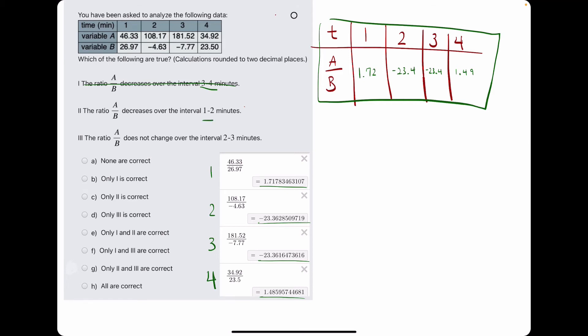So then we check for 1 to 2, and we check if it's decreasing. So from 1 to 2, it goes from 1.7 to negative 23.4, so that is a decrease. So that is a true statement.